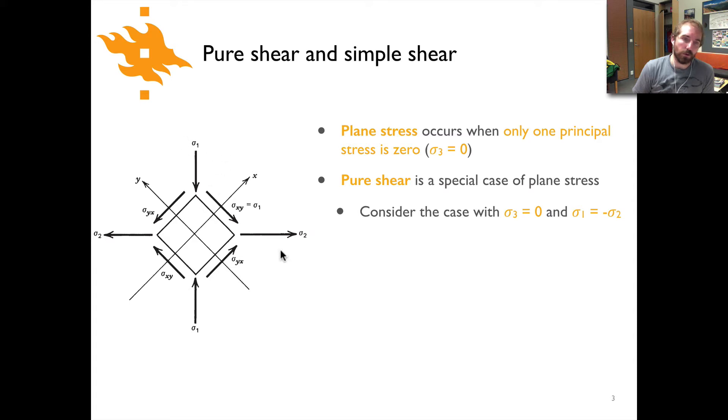So you can see sigma one here is vertical, sigma two is horizontal, they have the same magnitude and opposite directions. They're orthogonal of course, but sigma two is pointed out rather than in to this cube. Note the coordinate axes in this case are such that x is inclined at 45 degrees and so is y in the opposite direction.